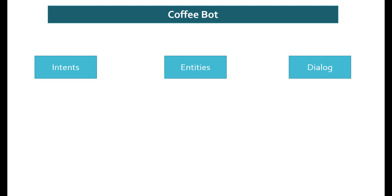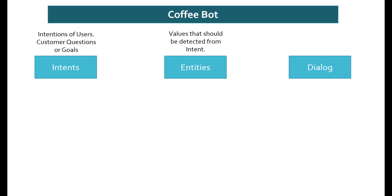Basically, in this chatbot there are going to be three main components: one is the intents, next is the entities, and then the dialogue. Intents are basically the questions or the intentions of the users — the questions that the customer will ask. Entities are going to be the values detected from the intents or from the questions of the customers. For example, if the customer is asking 'I want a hot coffee,' then 'hot' is the entity, or if the customer is asking 'I want a latte,' then 'latte' is the entity.